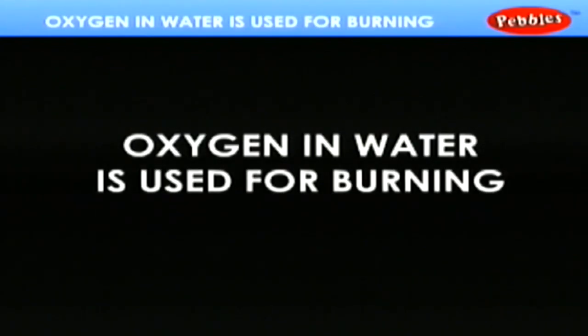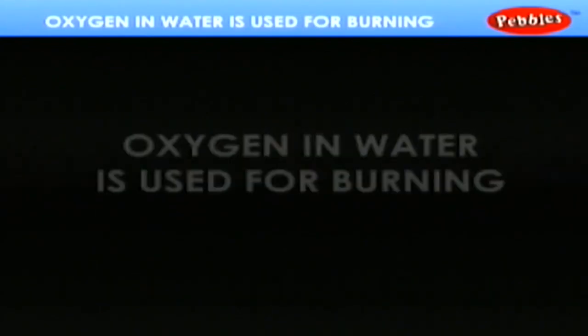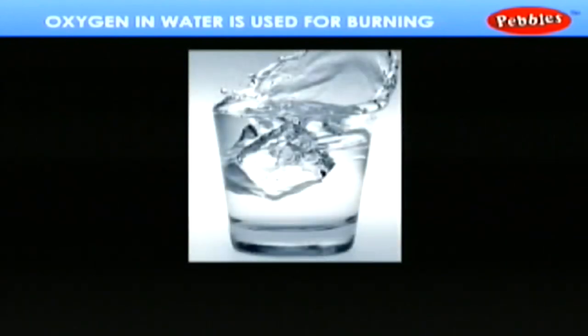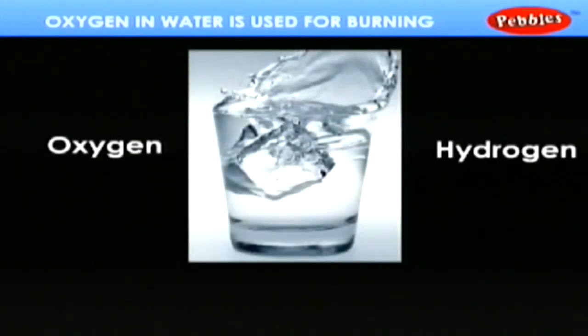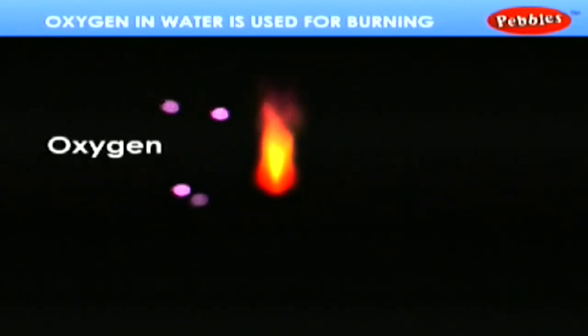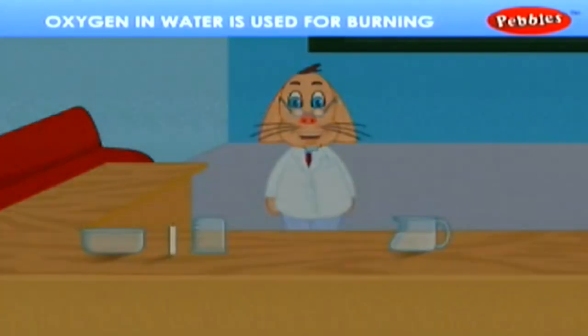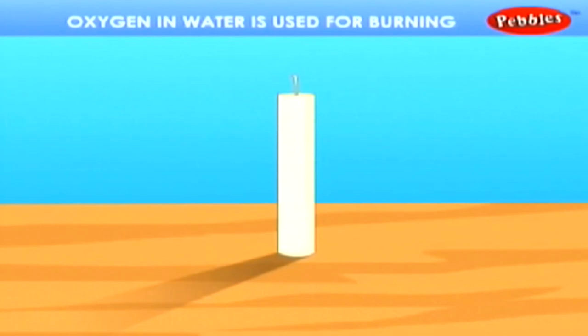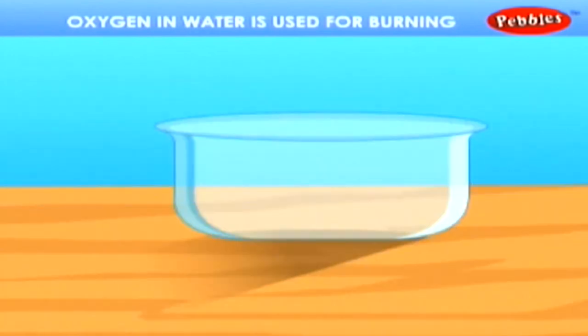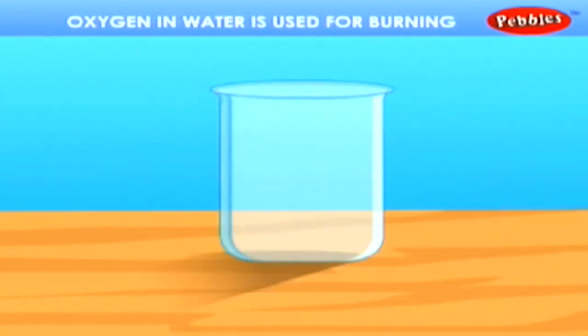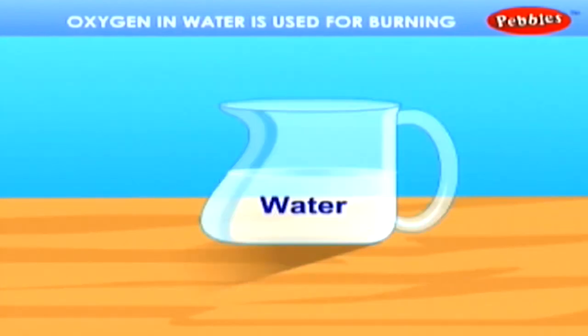Oxygen in water is used for burning. The drinking water we use contains oxygen and hydrogen molecules which are used for burning or lighting a flame. Let us discuss in the following experiment about how the oxygen present in water helps in burning at times. Take a candle, a glass jar, a shallow tray, and some water.